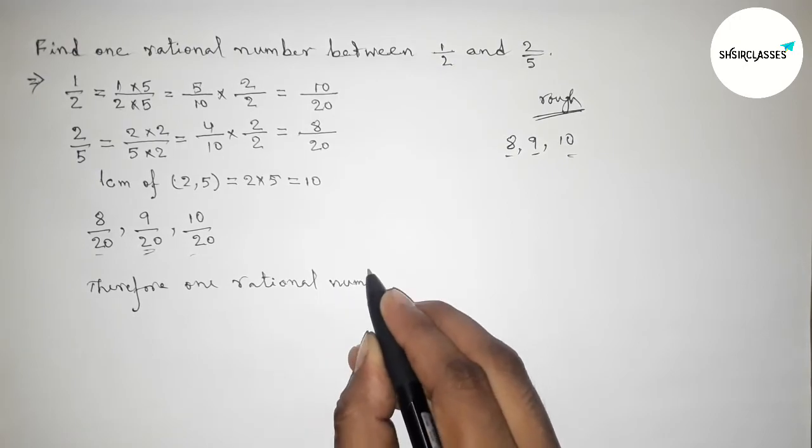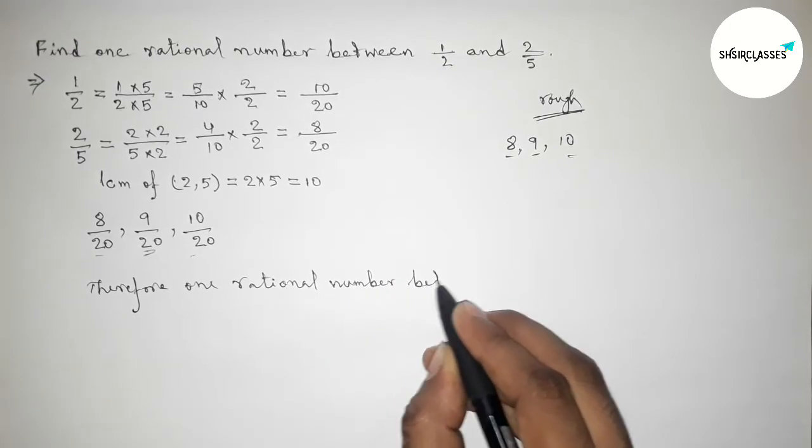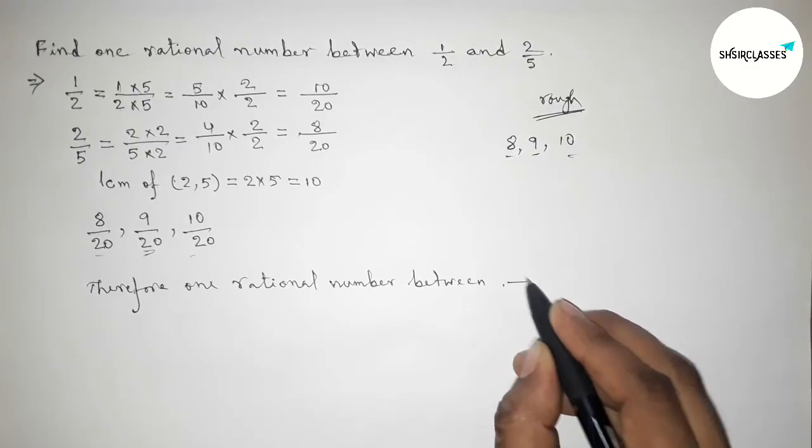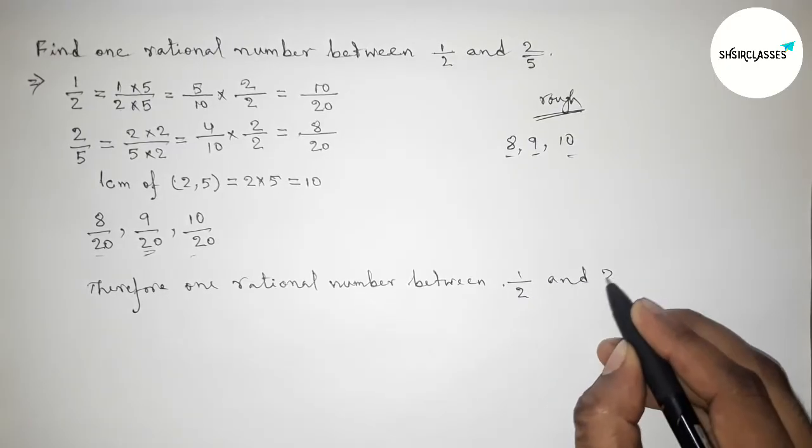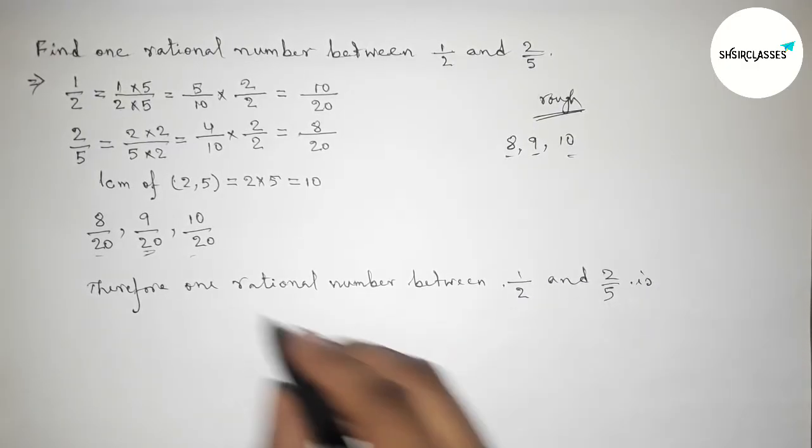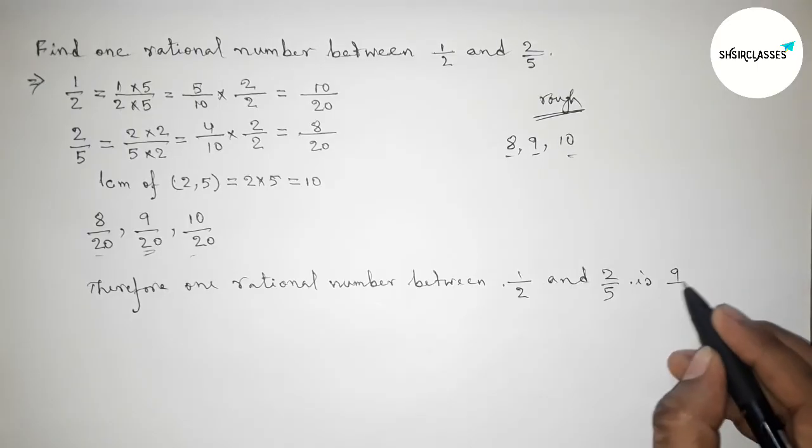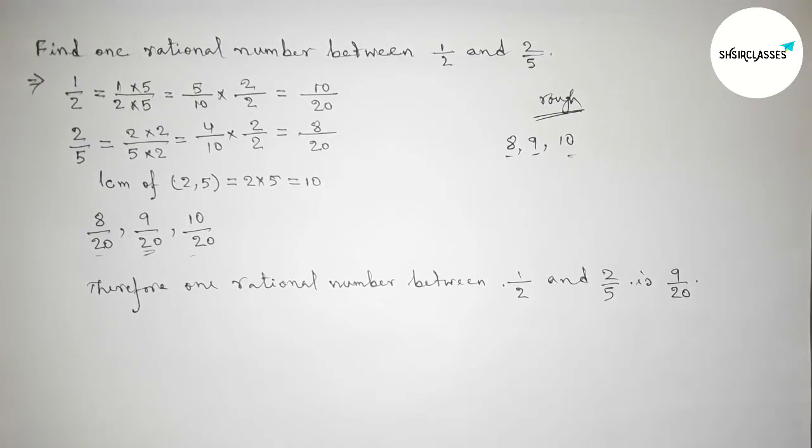Therefore, one required rational number between 1 by 2 and 2 by 5 is 9 by 20. That's all. Thanks for watching. If this video is helpful to you, then please share it with your friends. Thanks for watching.